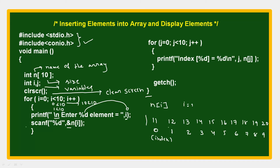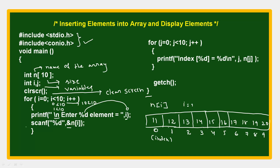For example, if I want to display 15, we use n[4] because 15 is at address (index) 4. You can see how elements are represented: 11 is at index 0, 12 is at index 1, and the last element 20 is at index 9. If we want to display element 19, its address is n[8].